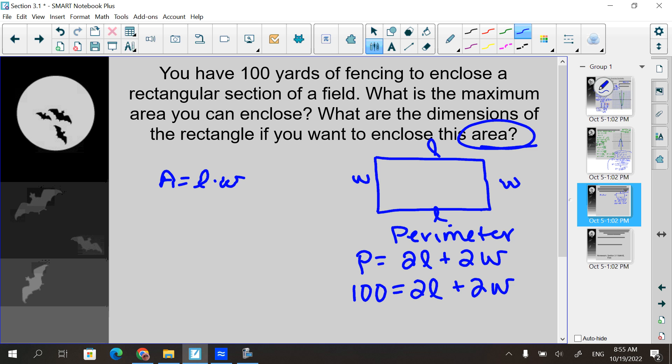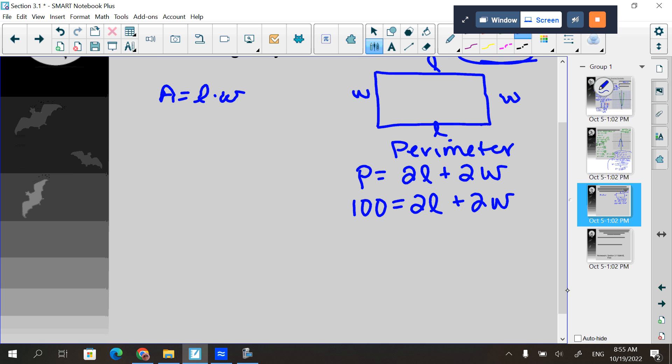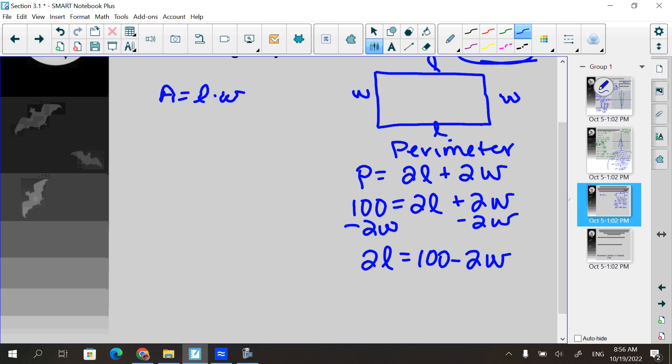And it doesn't matter. You can use L or W. And substitute it in over here. And then from there, you'll have a quadratic function that's what we've been studying in this section. So does anybody have a preference? Should I solve this for L or W? L. Okay. So we're going to get L by itself. So we're going to subtract 2W from both sides. So I get 2L equals 100 minus 2W. And then divide everything by 2. I get L equals 50 minus W.